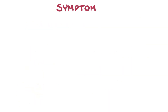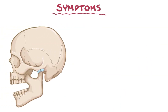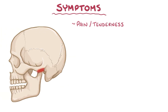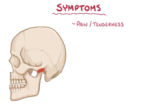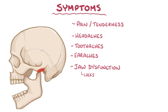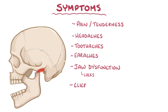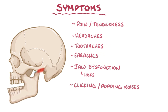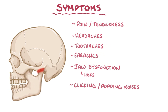The main symptom of temporomandibular joint disorder is pain or tenderness, especially with movement of the jaw, like when chewing. The pain can also radiate, causing headaches, toothaches, and earaches. It can also cause jaw dysfunction and limited range of jaw motion, where the jaw catches or locks in a certain position. There can also be clicking or popping noises when moving the jaw, as well as jaw deviations.